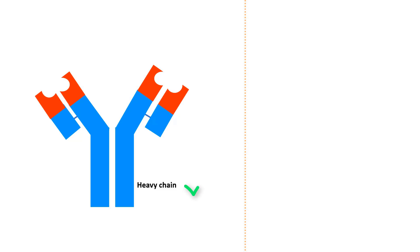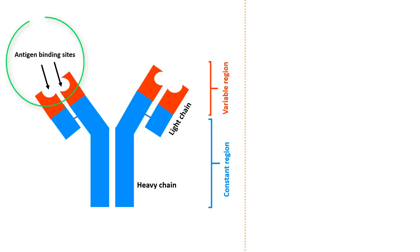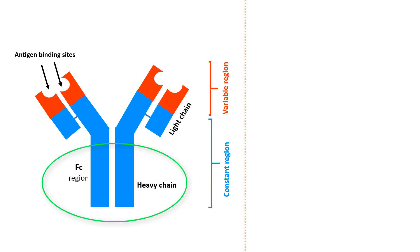The antibody is generally consisted of the heavy chain and the light chain. The heavy chain is always the constant region, whereas light chains are composed of both constant and variable regions. The antigen binding sites are present in the light region, whereas the FC region, which binds to immune cell receptors, is present in the heavy chain region.